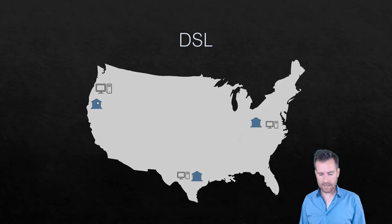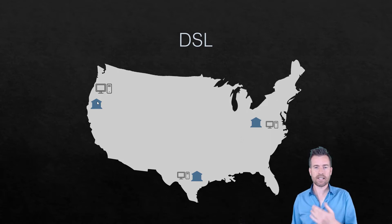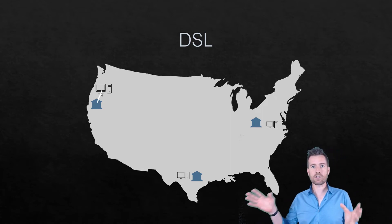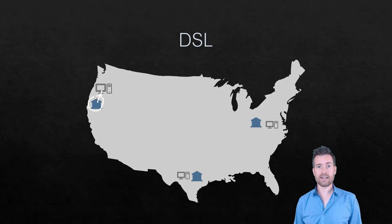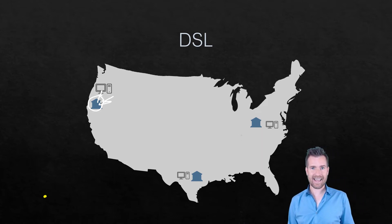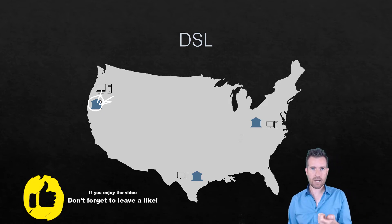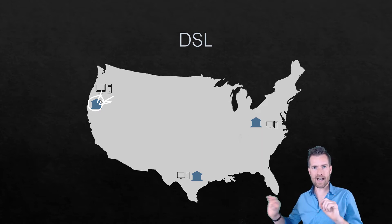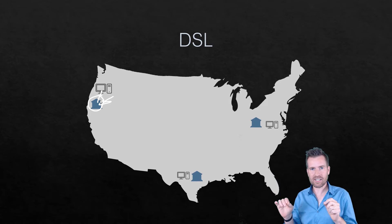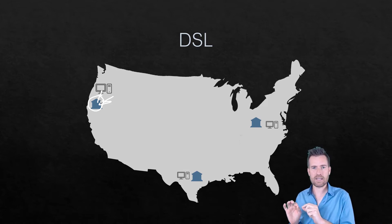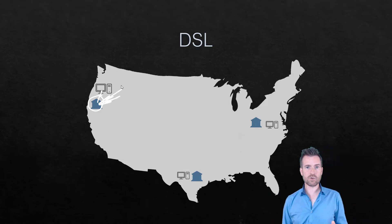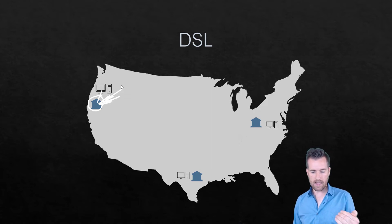DSL stands for Digital Subscriber Line. It uses phone cables coming into your house, repurposing them to send data. There are limitations with DSL: you need to be close enough to your central office to get DSL capabilities, and that central office needs a DSL interface to connect you to the internet. The cleanliness of the phone lines also matters — even if you're close enough to the central office, the signal may not be clean enough for good speed. So DSL speeds are generally not as great as what you can get with a cable modem.